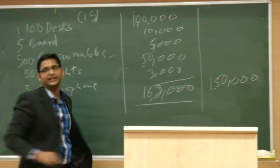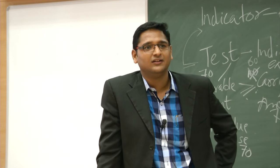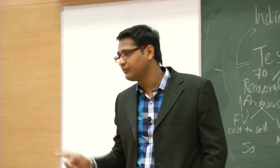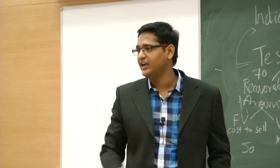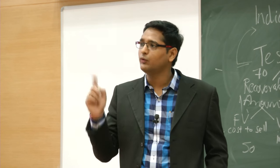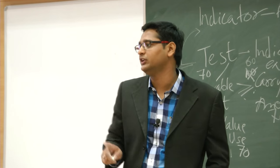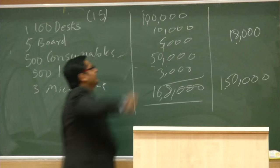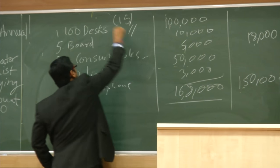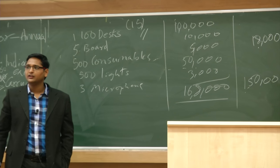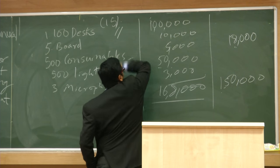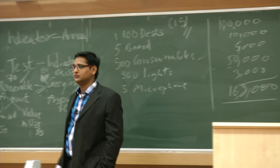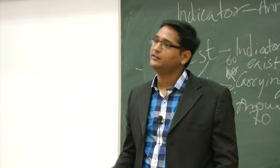The value derived from using this classroom is 1,50,000, while the carrying amount of all assets is 1,68,000 — giving an over-valuation of 18,000, which is the impairment. This 18,000 impairment is then distributed among the 15 damaged desks specifically, since that is where the impairment has occurred. So the value of 1,00,000 for desks becomes 82,000.